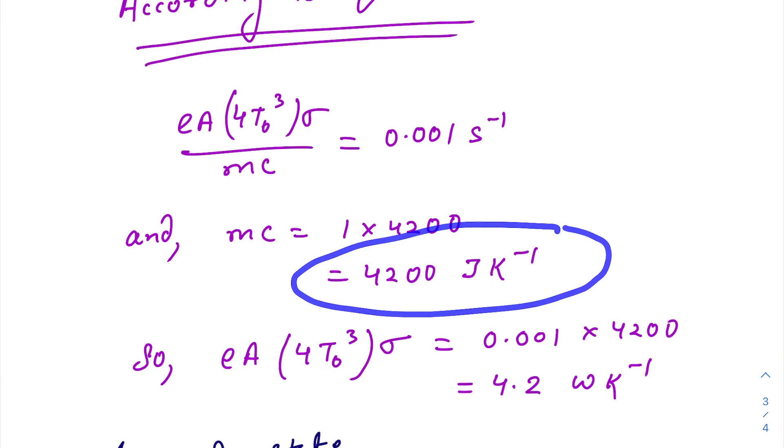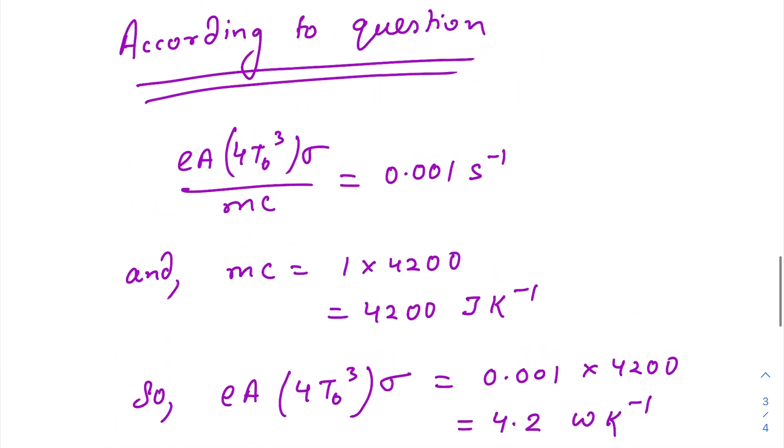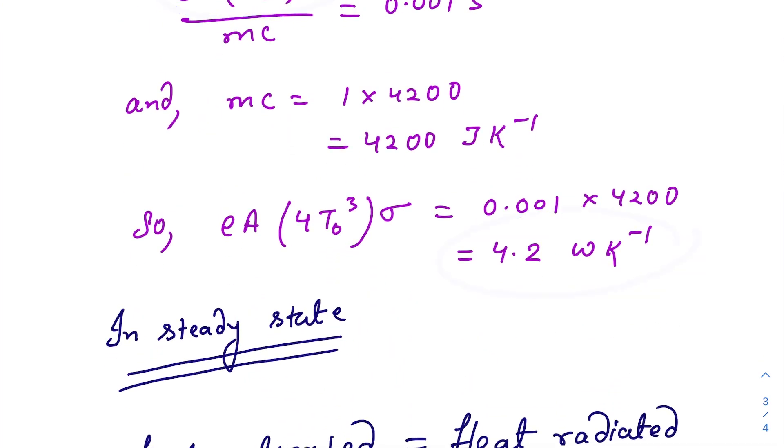M C that is the total heat capacity is 4200 Joule per Kelvin. From here, we get this numerator as 4.2 watts per Kelvin.